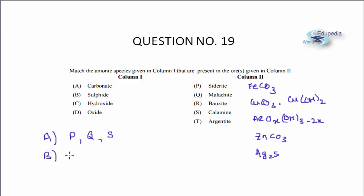B sulfide. You can only see one sulfide ore amongst all those given so that would only be your Ag2S so B will match with T only.